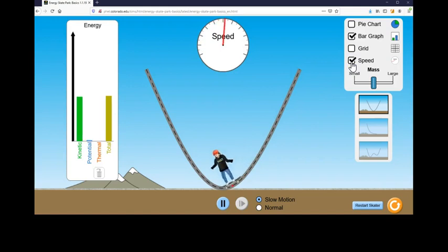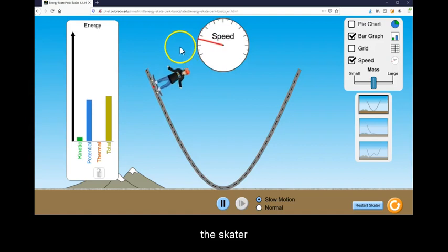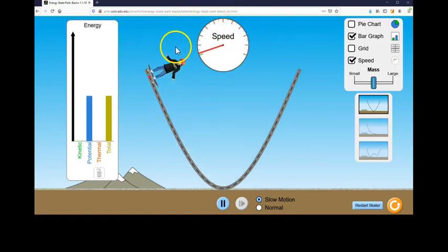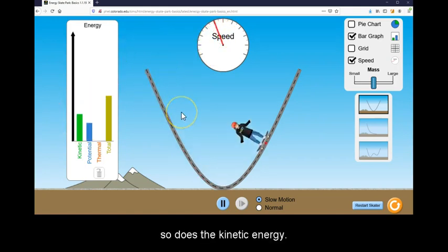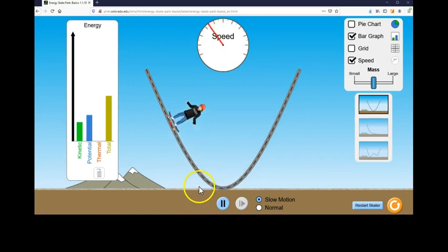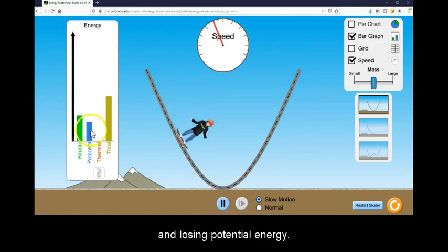Notice that as the skater goes downhill, she picks up speed. As the speed increases, so does the kinetic energy. This corresponds to her losing height and losing potential energy.